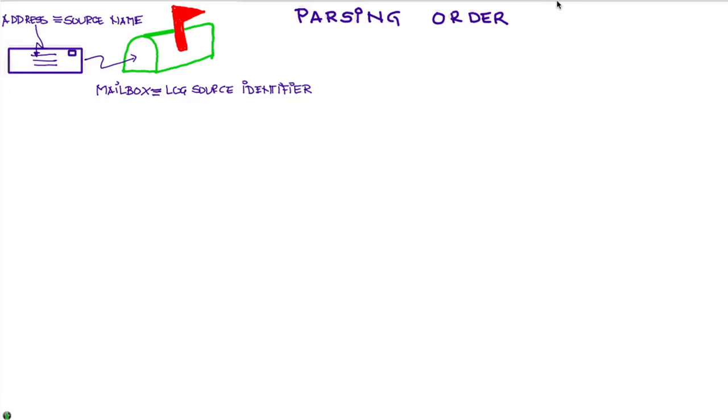Now what happens is that in some systems, you'll have the operating system sending logs, a database sending logs, and an app that uses the database sending logs, and they all have the same log source identifier. They are on the very same machine.